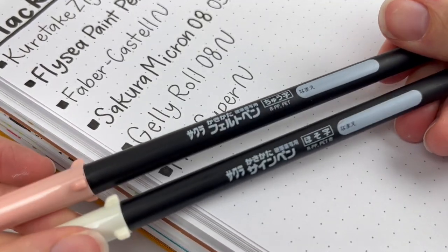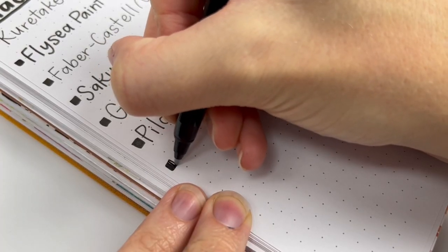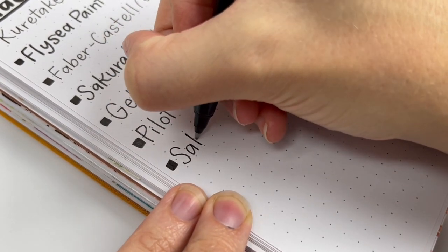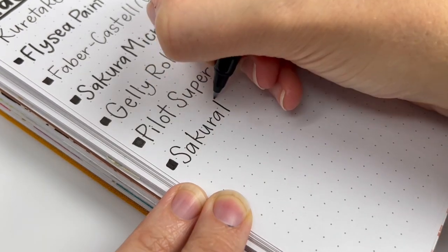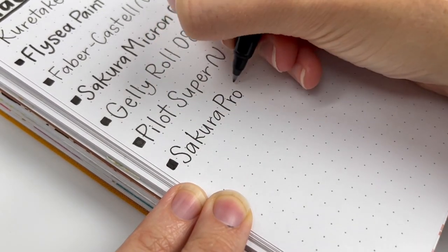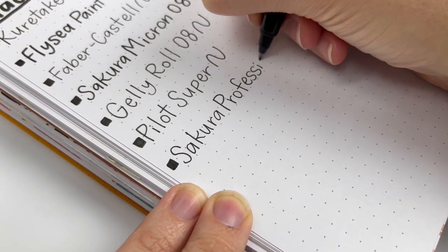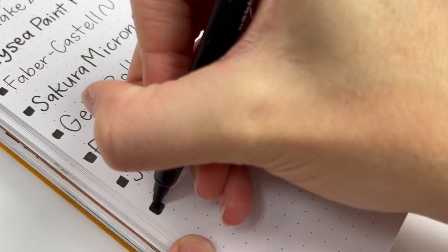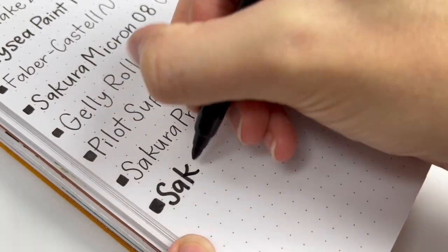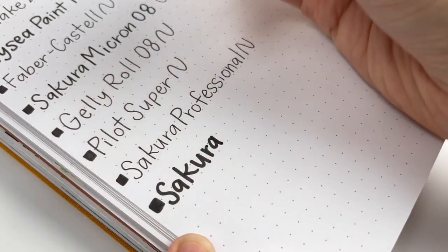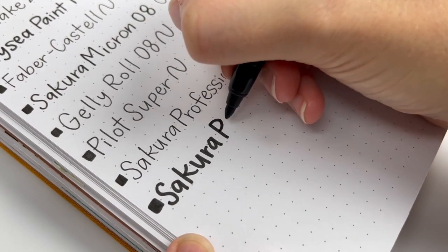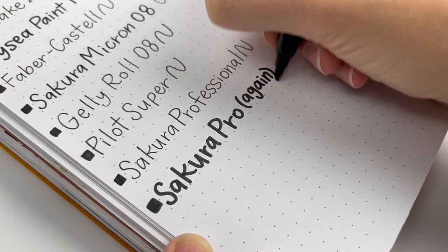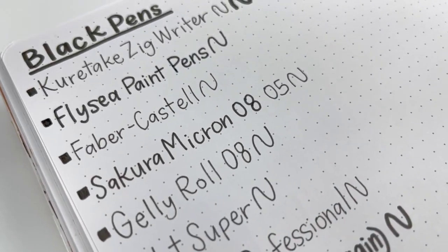And then these next two are the Sakura Pigma Professional. I think that's what they're called. They look the same as the Pigma that has the brush pens, but I have the fine tip and the bullet tip, and they're good. They are waterproof, but I do use my Kuretake Rider much more than these. So when you're looking for black pens, I would recommend definitely looking for something waterproof because it's nice to use with watercolor, but there's a lot of really good pens depending on the thickness that you want and if you want it waterproof.